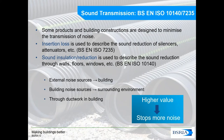The third type of acoustic measurement is sound transmission. There are two types of descriptors: insertion loss, which describes the sound reduction of silencers and attenuators, and sound insulation or sound reduction, used for walls, floors, windows, and building fabric. Three transmission aspects are commonly considered: external noise sources such as traffic being transmitted into a building, building noise sources being transmitted to the surrounding environment, and noise transmitted through ductwork within buildings.